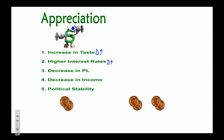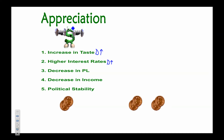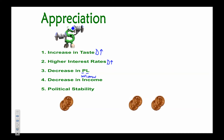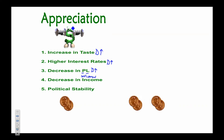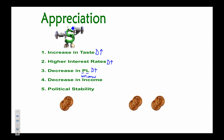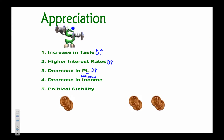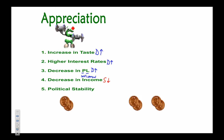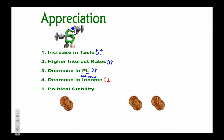Third, price level: if prices are lower in the US than in other countries, that creates increased demand for the US dollar to pay for increased exports. Fourth, a decrease in income: if average US incomes drop, we buy less from other countries and supply fewer of our dollars in the foreign exchange market. Fifth, political stability increases demand for the dollar.